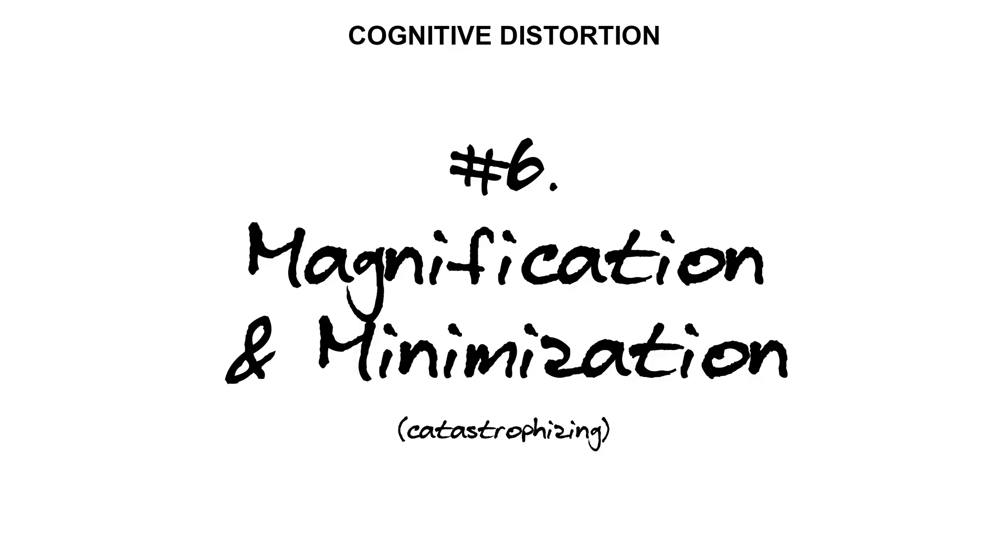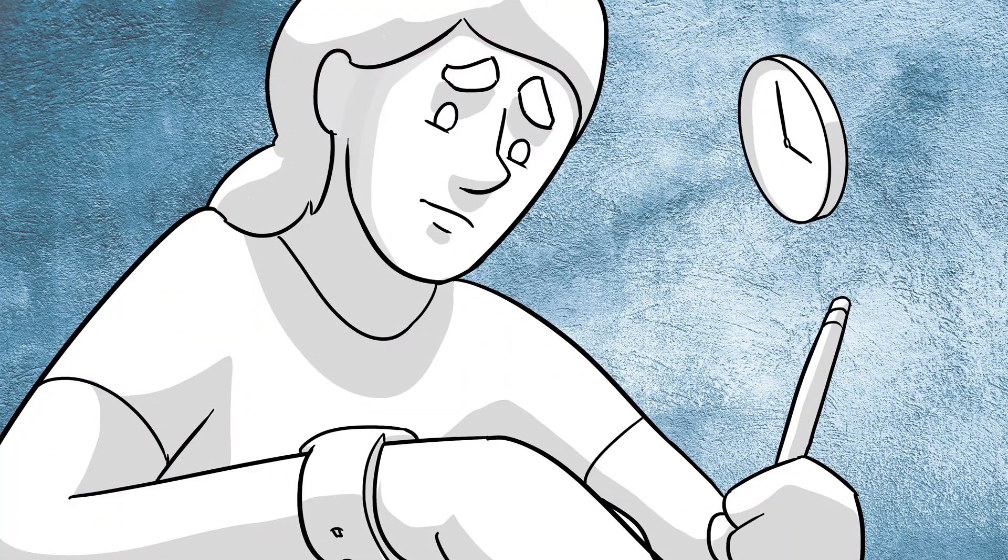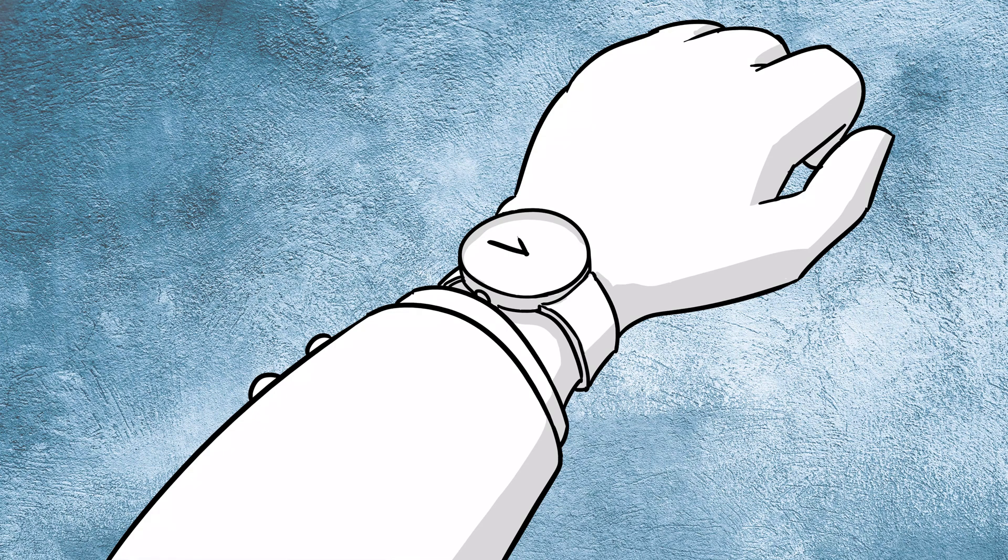Cognitive distortion number six, magnification and minimization. Blowing things up out of proportion or shrinking them down. This is also called catastrophizing. If I don't pass this exam, I will die. If I'm late again, I'll lose my job. They'll just fire me right there on the spot. Rarely are situations truly dire in our lives.